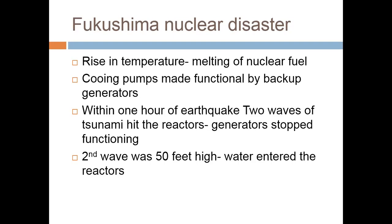Unfortunately, the earthquake was so strong that it triggered a tsunami in the Pacific Ocean. Two tsunami waves hit the reactor. The backup generators were also damaged by the waves. The cooling of the reactor was no longer functioning. The second wave was so strong — about 20 feet high — and it breached the external wall of the reactor. Water flooded inside the reactor, and the cooling pumps also shut down completely.